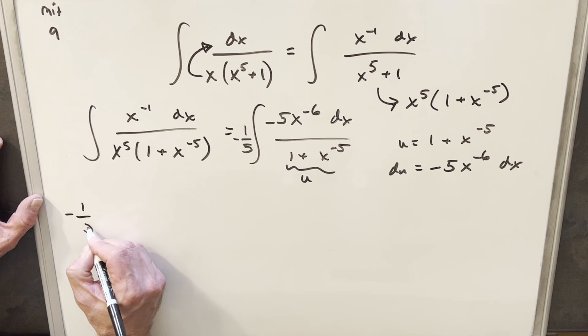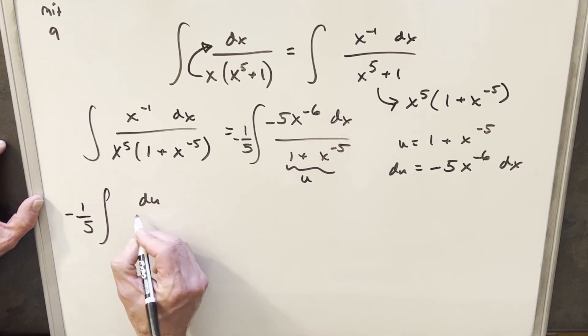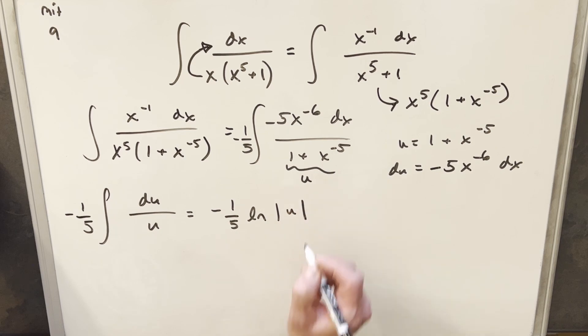Okay, so now I can substitute. We'll still have our minus 1 over 5. Numerator, like I said, is going to be du. Denominator is going to be just u. This is going to give us minus 1 over 5 natural log absolute value u.